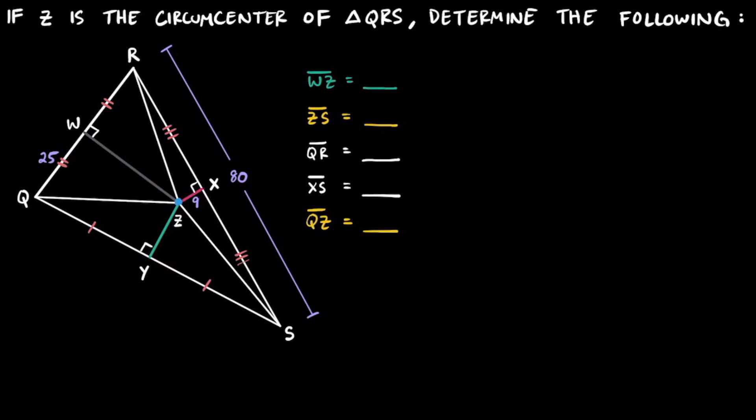Another unique property that you want to know is that segment RZ, segment QZ, and segment SZ are all congruent. Basically, the distance from the circumcenter to each of the corners or the vertices are all the same. Now let's see if we can use all this information that we know to figure out these five pieces of information.